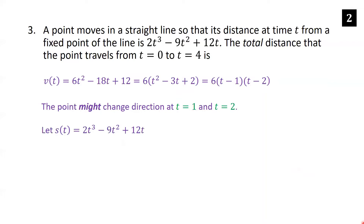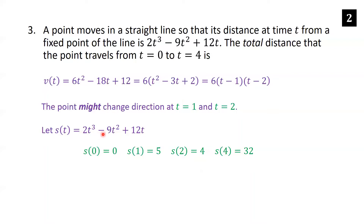Letting s(t) equal 2t cubed minus 9t squared plus 12t, we compute s at the key points. s(0) equals 0. s(1) equals 2 minus 9 plus 12, which is 5. s(2): 8 times 2 is 16, minus 9 times 4 is 36, plus 24 — that gives 4. And s(4) equals 32.